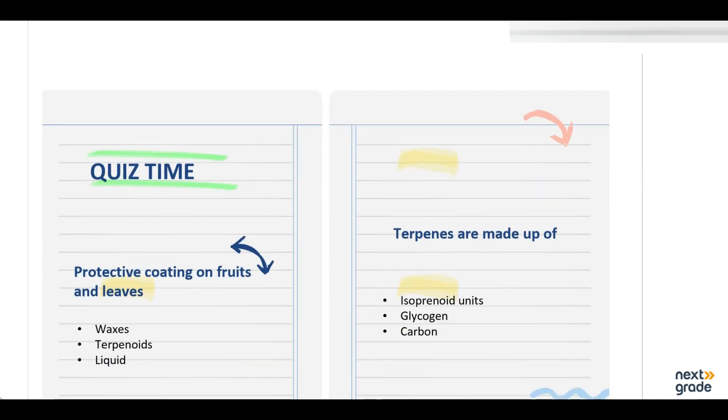Now there is the quiz time. The first MCQ for today. Protective coating on fruits and leaves. What does it do? Which protective coating provides on fruits and leaves? Are they waxes, terpenoids or lipids? Lipids will be released. If the terpenoids are made from isoprenoid units, but they don't act as a protective coating on fruits and leaves. So the option that is correct here is waxes.